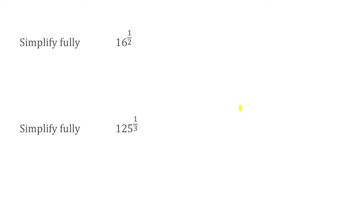For this first example, we have 16 to the power of a half. There's a two on the denominator, so we need to find the square root of 16, which is equal to four. We'd raise that to the power of one, but that wouldn't change anything, so our answer is just four.